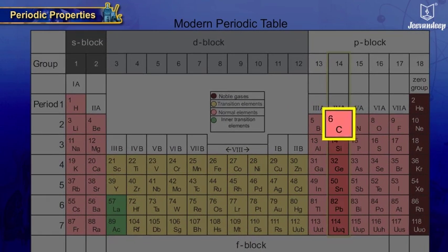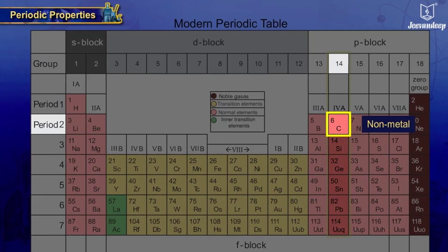For example, carbon placed in 14th group, 2nd period, is a non-metal, whereas lead placed in 14th, i.e., same group, but 6th period, is a metal.